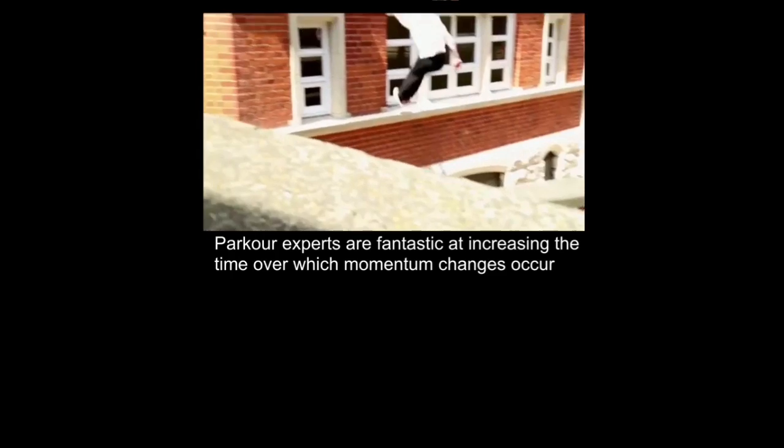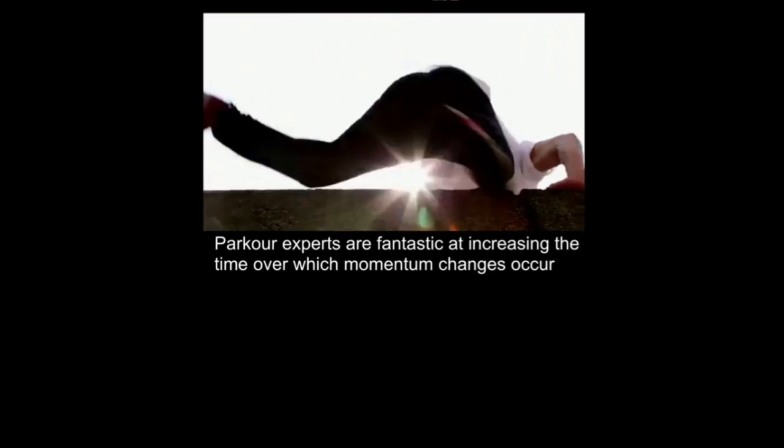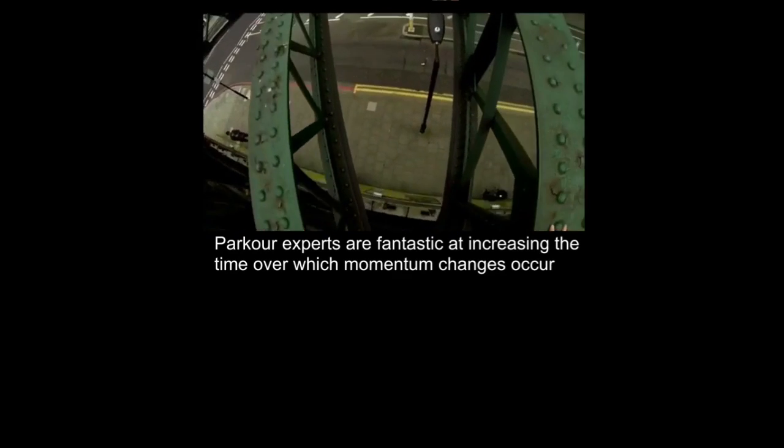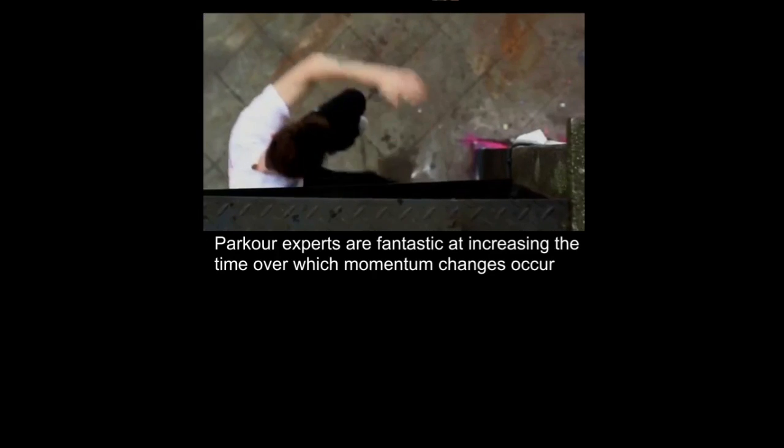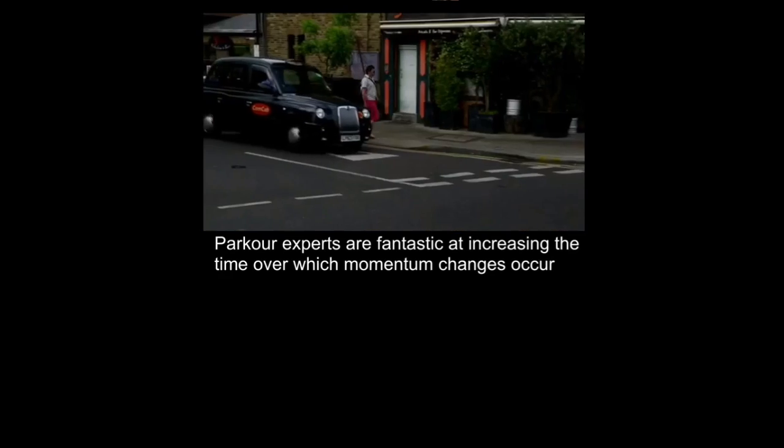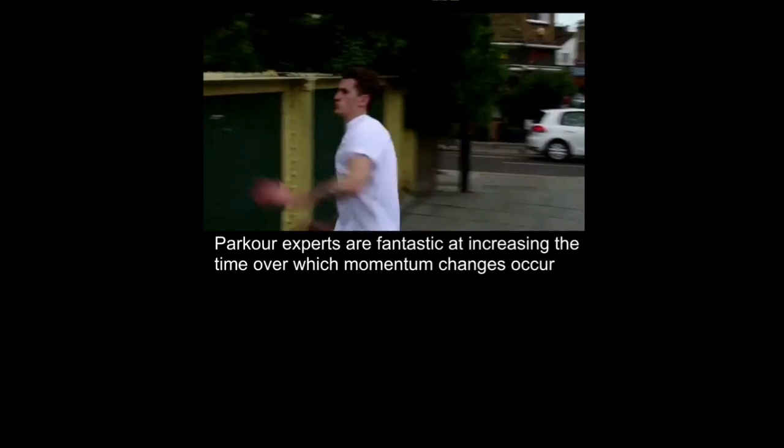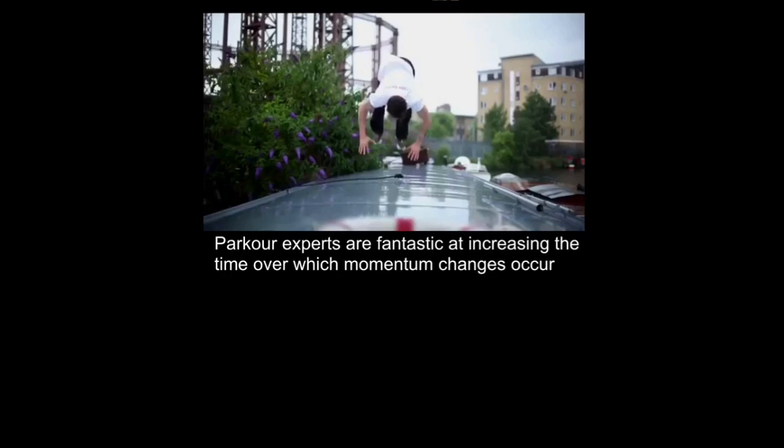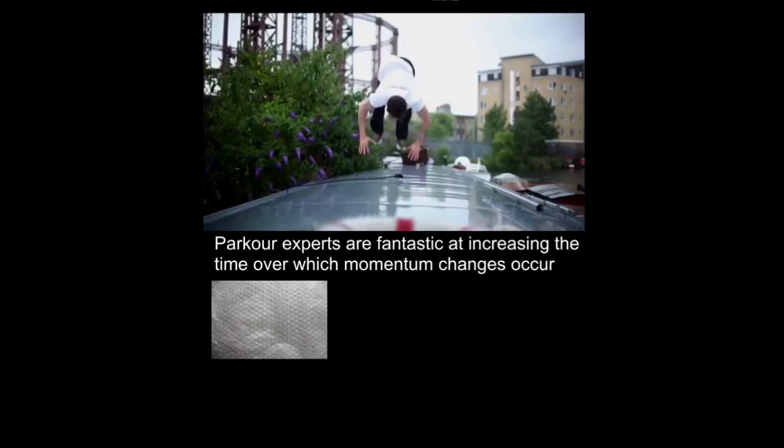Parkour runners are experts at increasing the time over which momentum changes occur. You'll see that they bend their knees a lot, they transfer their momentum and they stop themselves getting injured. This also explains why we basically use bubble wrap to package breakable items. These do exactly the same thing as your knees bending, as seat belts, as crumple zones but really most aptly like little airbags. Because when a force is applied to the object it pushes against these air bubbles and they basically compress slowly again spreading the momentum change over a greater amount of time.